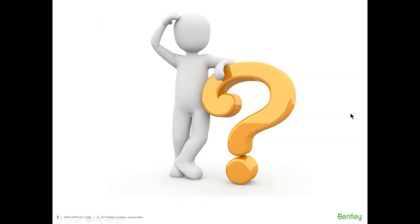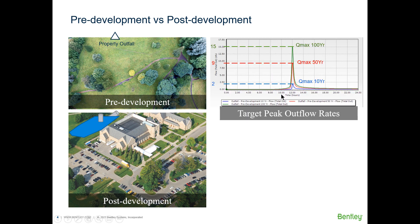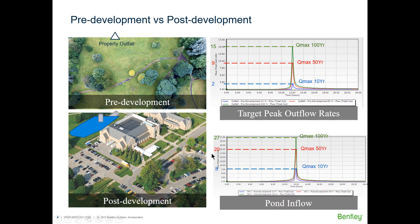So how does a developer solve this issue? With a detention pond. Those pre-developed peak flow rates are going to become the target peak flow rates out of our detention pond. And the post-development runoff becomes the inflow to the pond. Knowing this pond inflow and the target peak outflow rates we get ready to start our pond design.